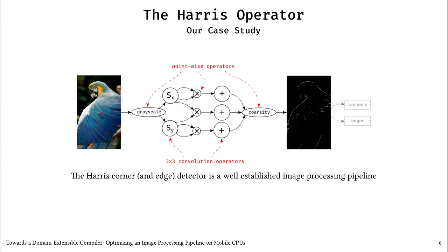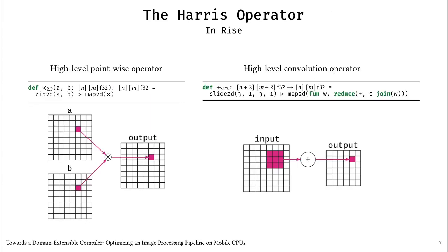Notice how the Harris operator is composed of pointwise and convolution operators. How can we represent such operators in RISE? As you can see on the left example, pointwise operators are defined using ZIP to pair image elements and MAP to apply a function to each pair of elements. As you can see on the right example, convolution operators are defined using SLIDE to create neighborhoods and a map pattern which reduces these neighborhoods. The two-dimensional patterns that you can see in these programs are actually defined as compositions of one-dimensional patterns.